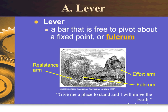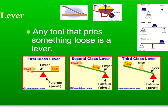The simple machine we will be reviewing is the lever. A lever is defined as a bar that is free to pivot about a fixed point — that fixed point is the fulcrum. We can divide levers into categories based on where the fulcrum is located: first class lever, second class lever, and third class lever.